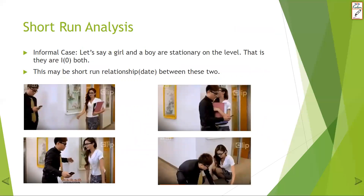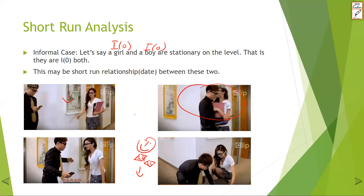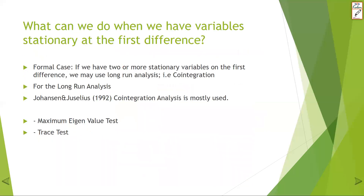Now the funny one for short-run analysis. Let's say a girl and a boy are both stationary on the level — girl is I(0) and boy is I(0). They have short-run analysis because they are stationary on the level. In the picture they are walking, they crash, and finally books are on the floor. This may be a short-run relationship — maybe you may remember easily, it's just a date between these two. So if they are both I(0), this is a short-run relationship.